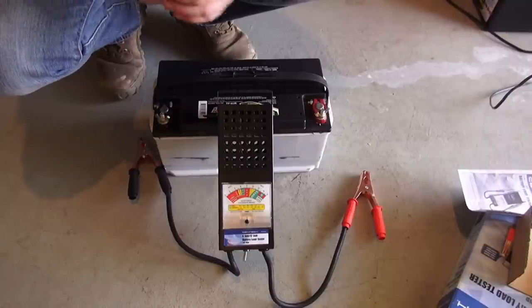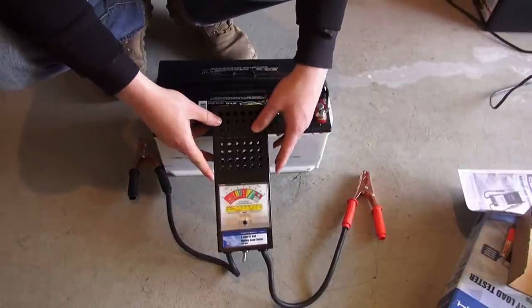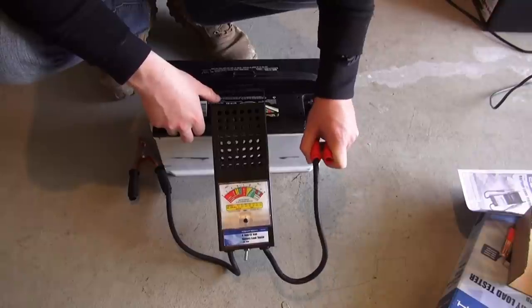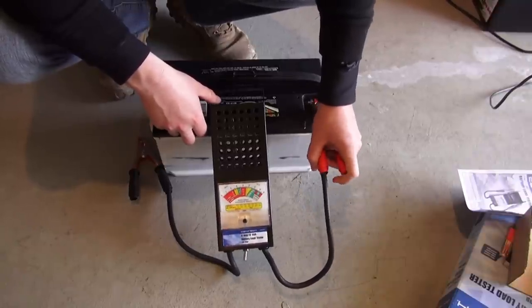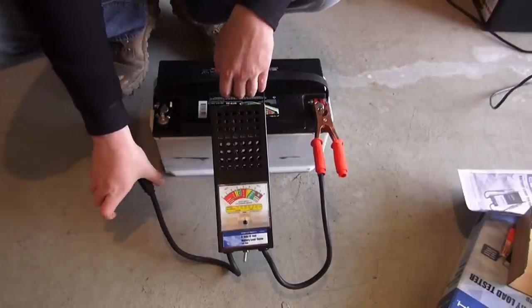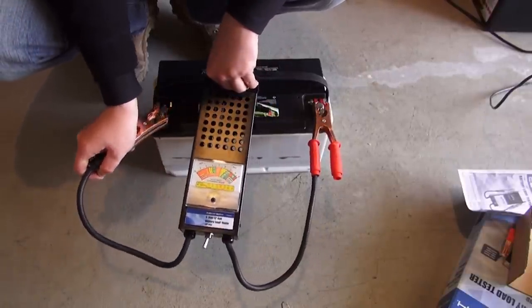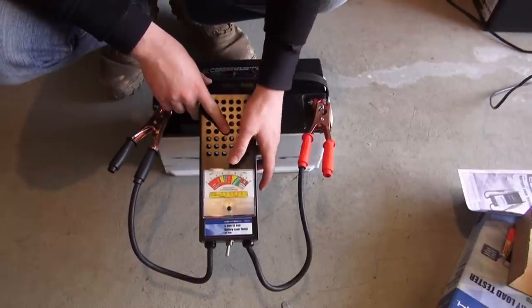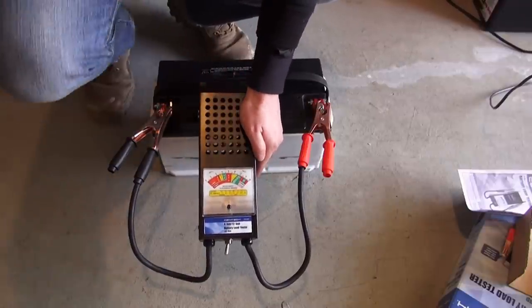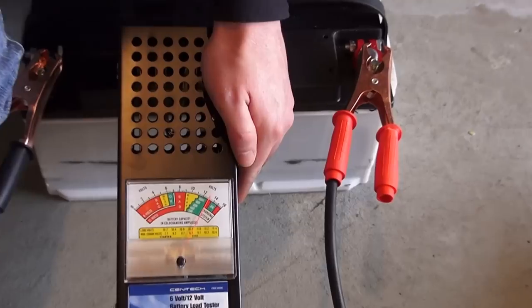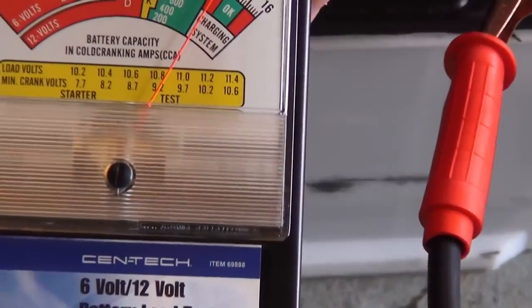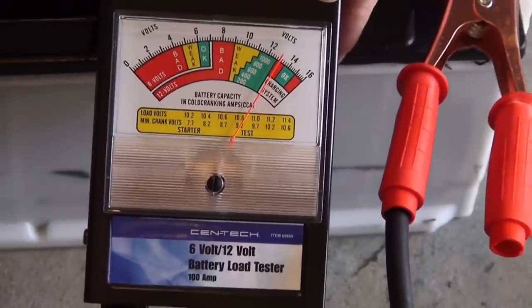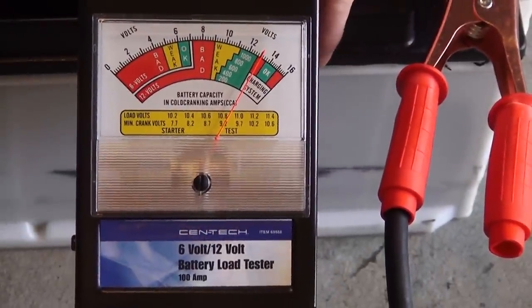Alright, so now that I zoomed out we're going to attach our tester to our battery. Positive to positive. Negative to negative. Okay. Now you're going to see immediately that this is a fresh battery. It just got charged by the way. You're going to see immediately that it is well past the green. As I stated, it's a very freshly charged battery.